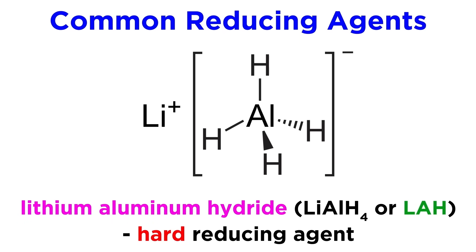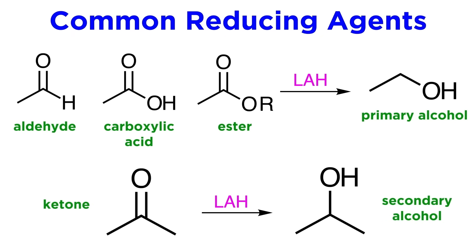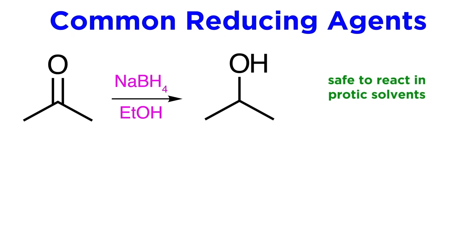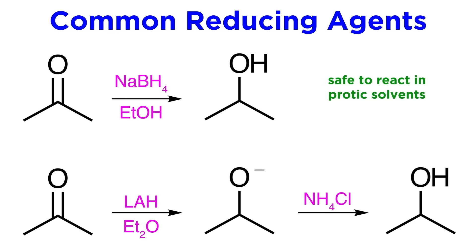By contrast, lithium aluminum hydride, sometimes abbreviated as LAH, is a hard reducing agent. It will be able to reduce aldehydes, carboxylic acids, and esters down to the primary alcohol, as well as ketones down to the secondary alcohol. We should note that sodium borohydride can safely react in protic solvents, like ethanol, whereas lithium aluminum hydride, being more reactive, will require an aprotic solvent, such as diethyl ether, so as to avoid an acid-base reaction. With this reagent, because of the aprotic environment, once a compound is reduced, it will leave an oxyanion, and acidic workup with something like ammonium chloride is required to provide the proton necessary to get the desired product.